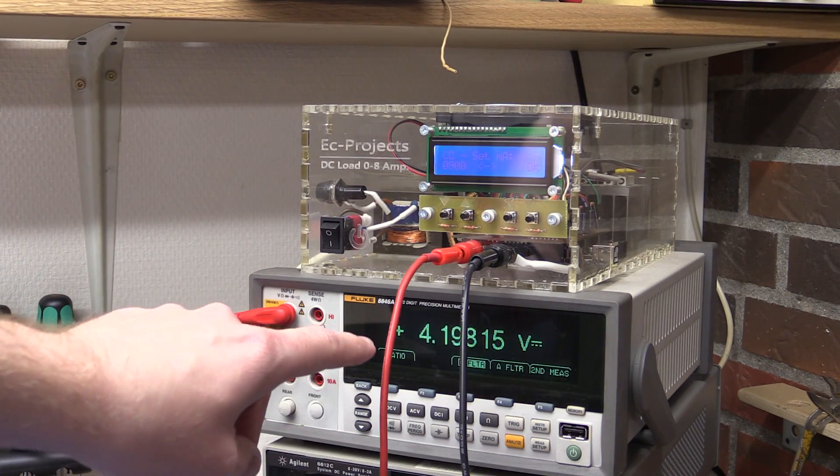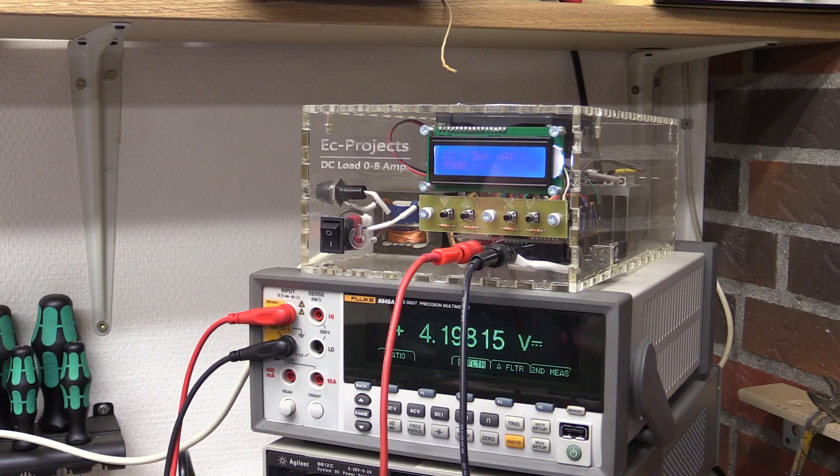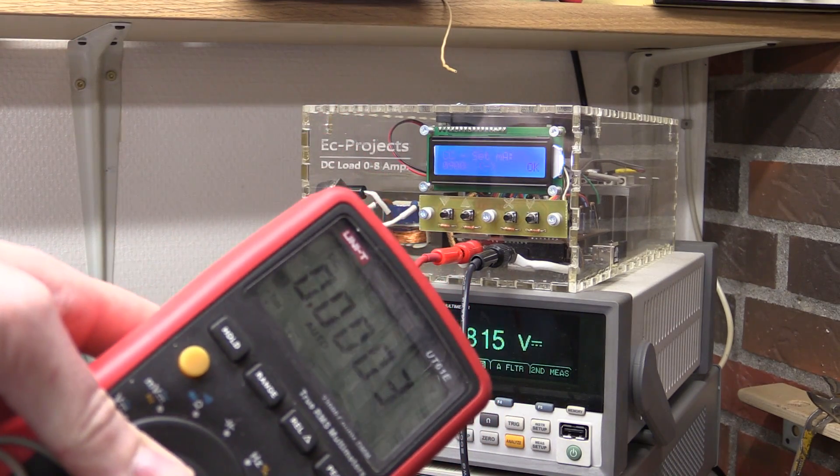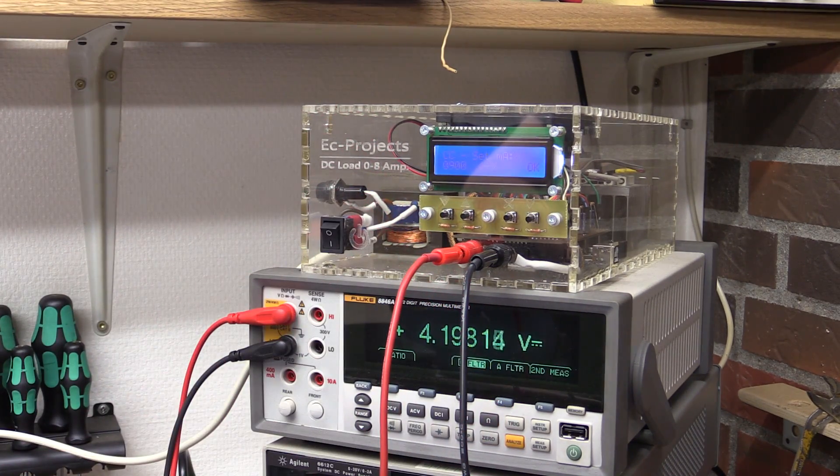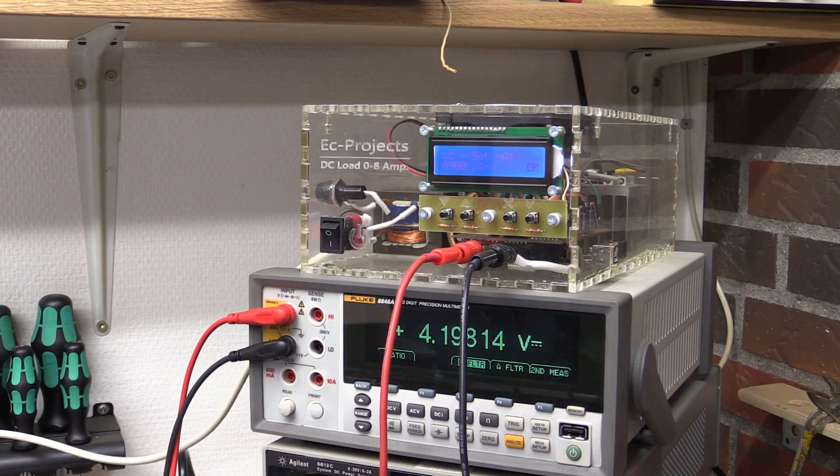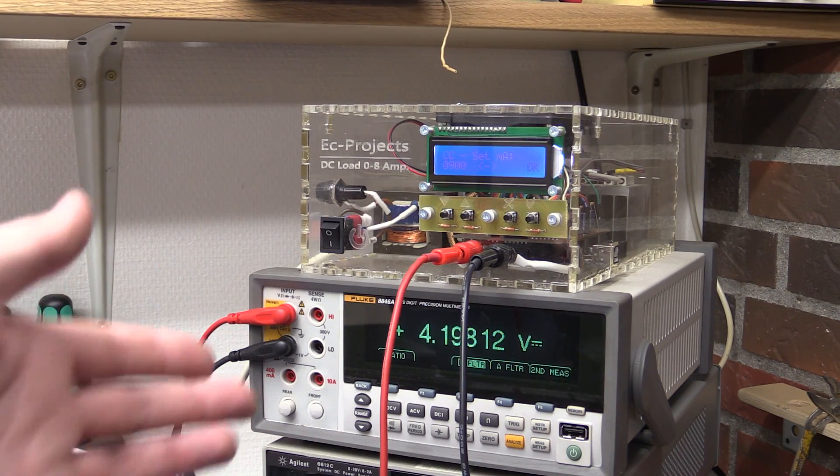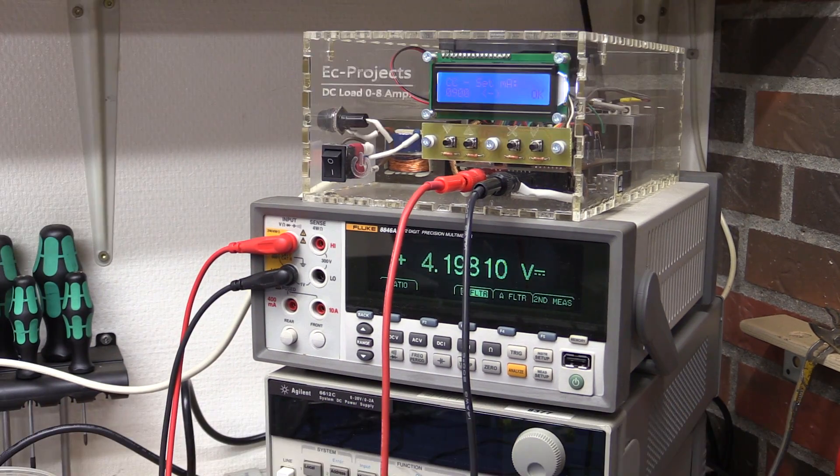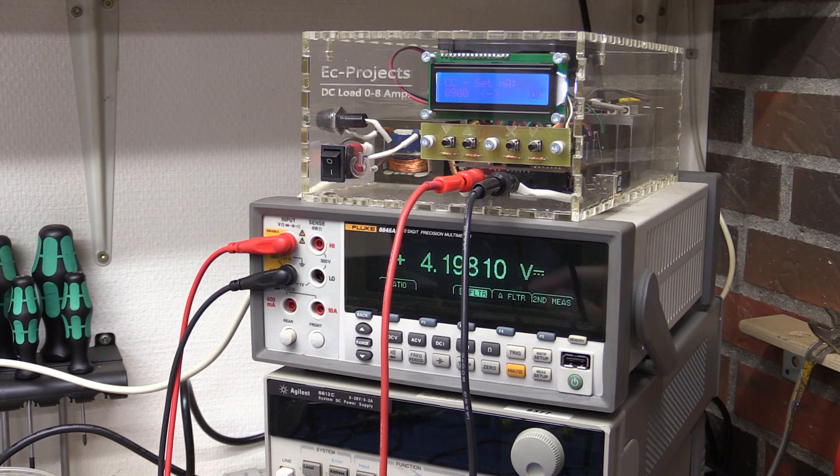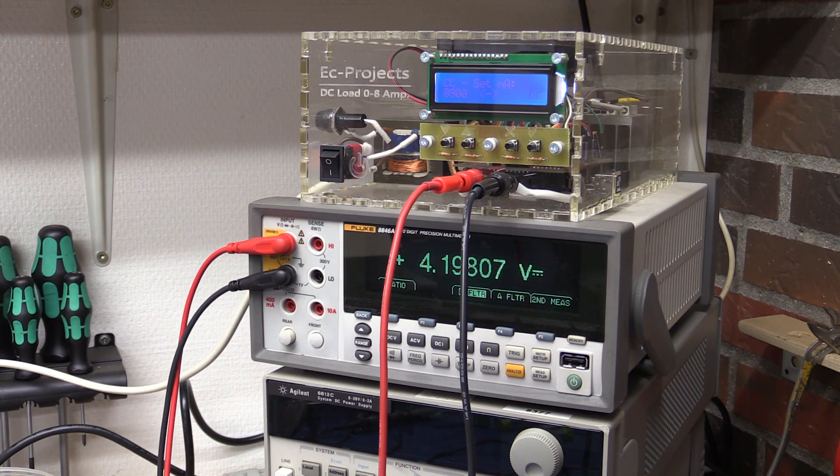So the Fluke is saying 4.198, so the Unity is almost 10 millivolts out now actually. It's no big deal, but something to keep in mind. It could also be the Fluke of course, but I'll put my money on the Unity being out. Anyway, let's start the discharge test. I'll get a stopwatch and then we can see how much capacity is in the battery.